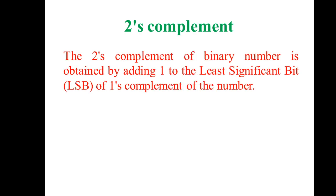First of all, what do you mean by two's complement? Two's complement of any binary number is obtained by adding one to the least significant bit. Now what do you mean by least significant bit? As I have told you many times in previous video lectures on number systems, least significant bit means the right-hand side digit.